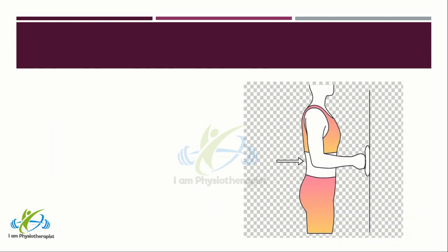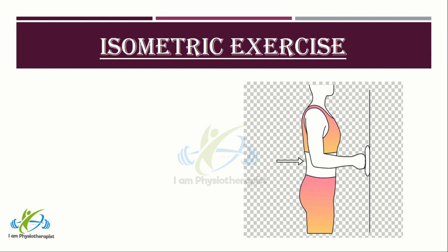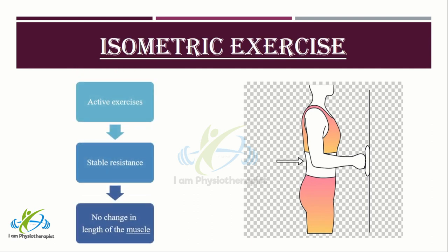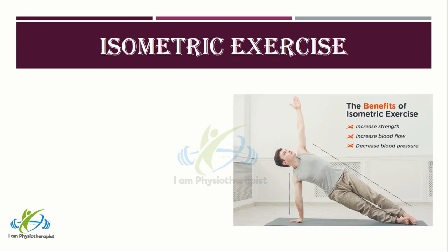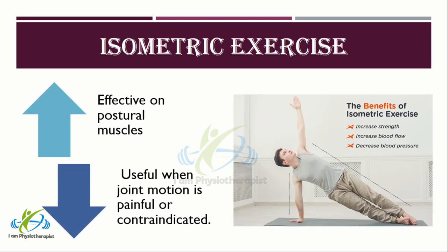Isometric exercises are active exercises performed against stable resistance, without change in the length of the muscle. These exercises involve the exertion of force against an immovable object, or the holding of an object in a static position. They are relatively easy to perform and require little time. Isometric exercises are very effective on postural muscles and are useful when joint motion is painful or contraindicated.